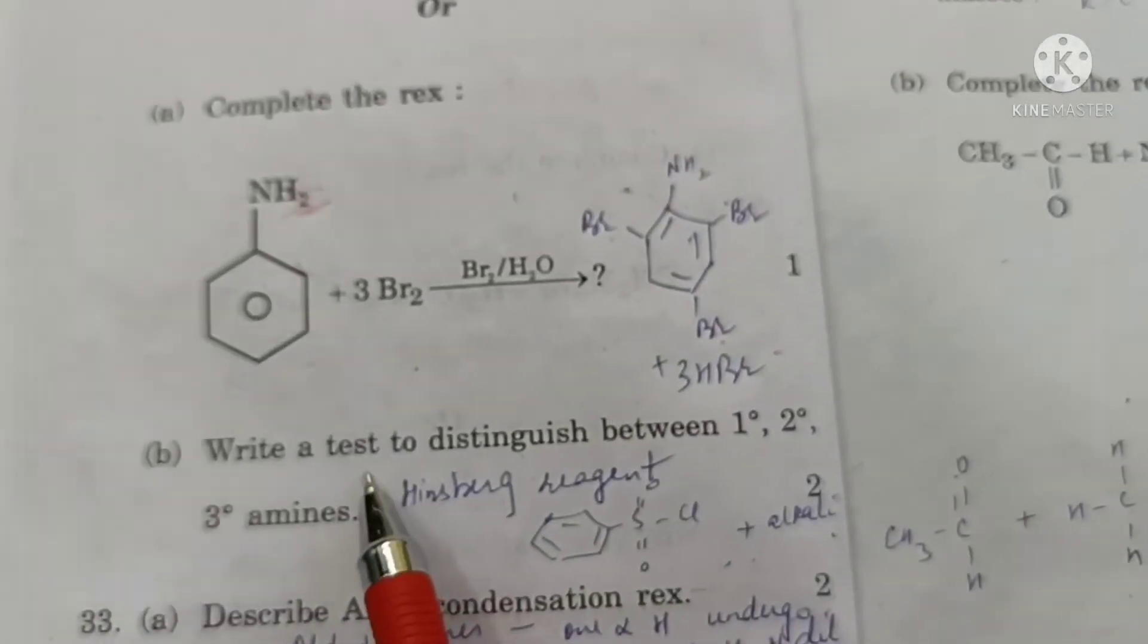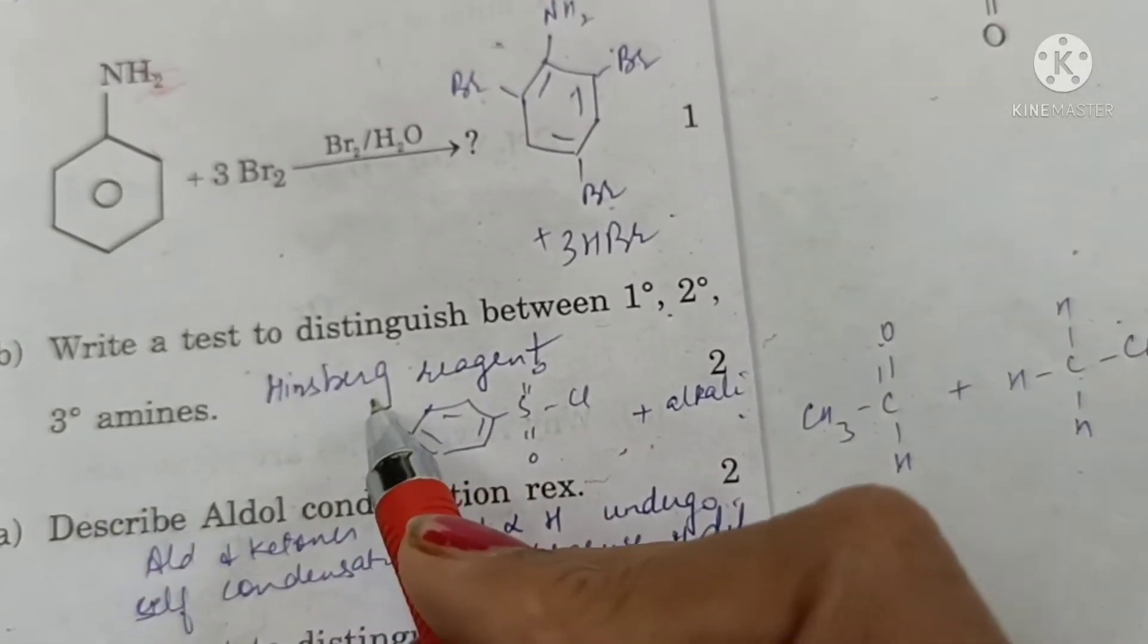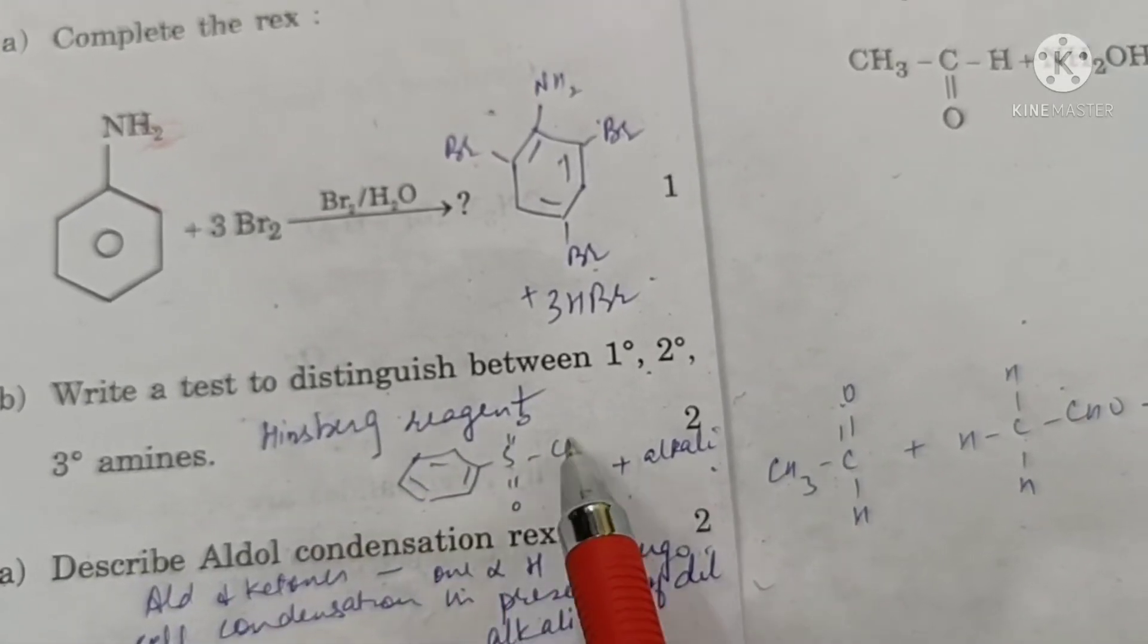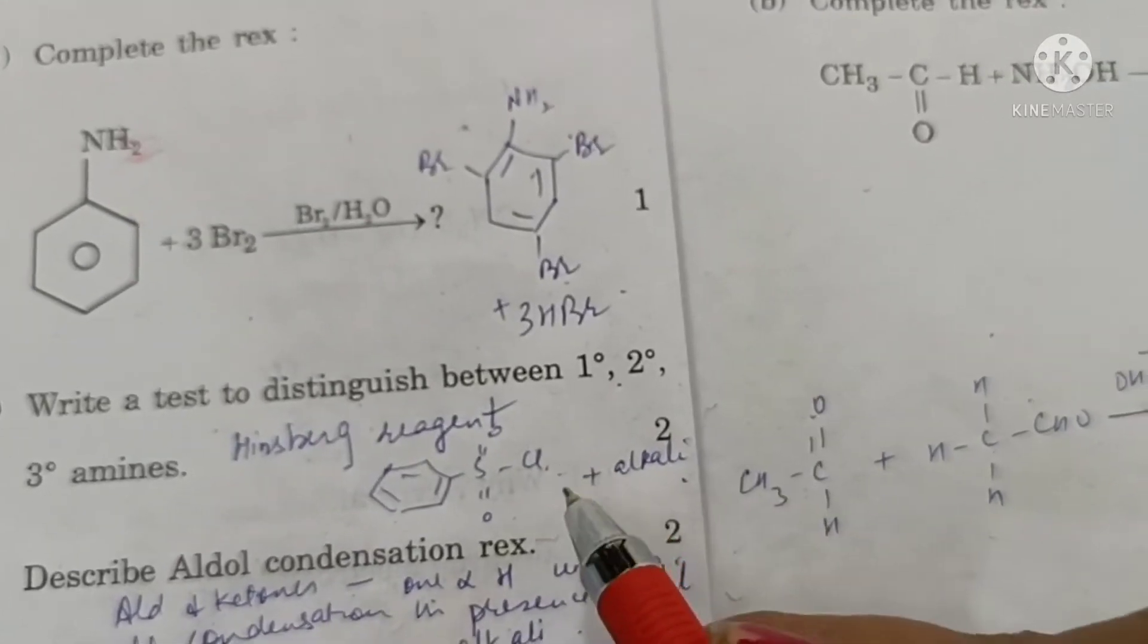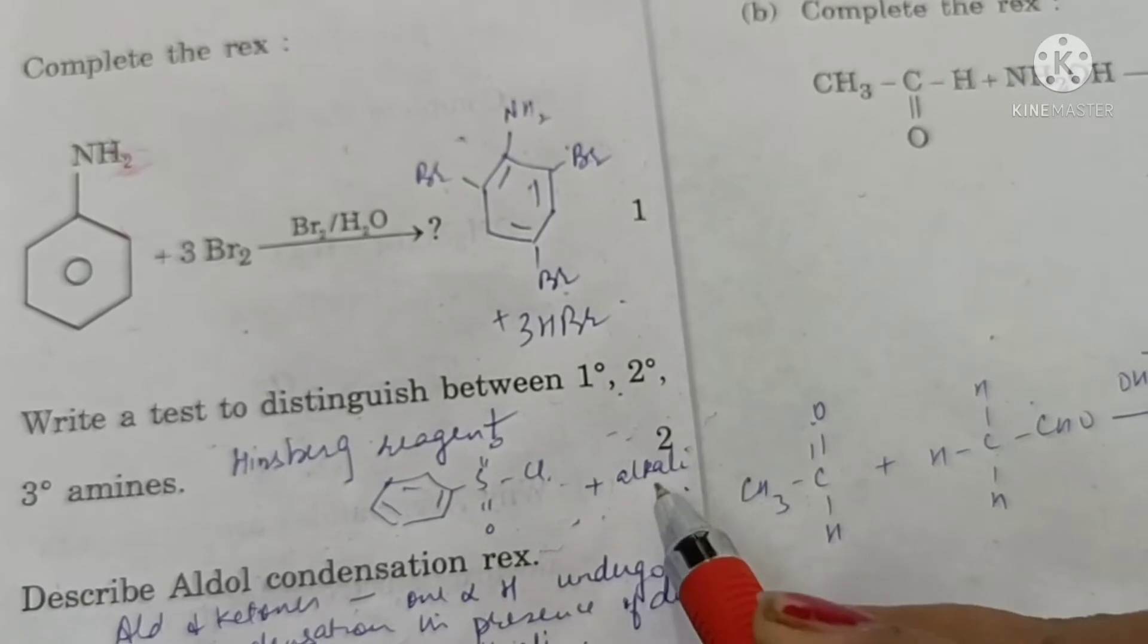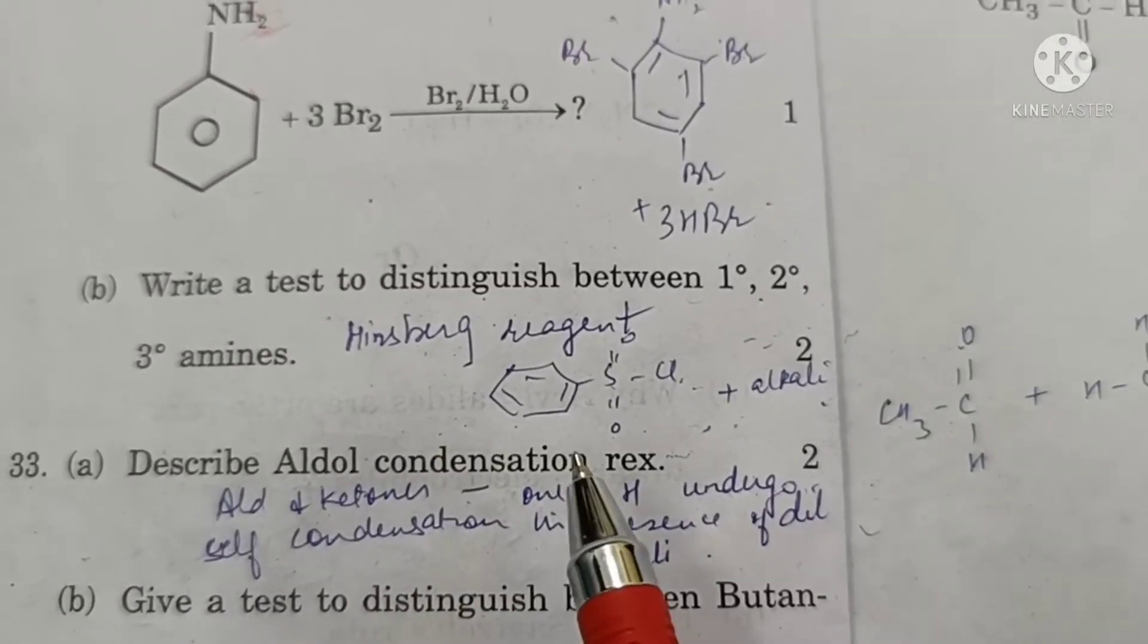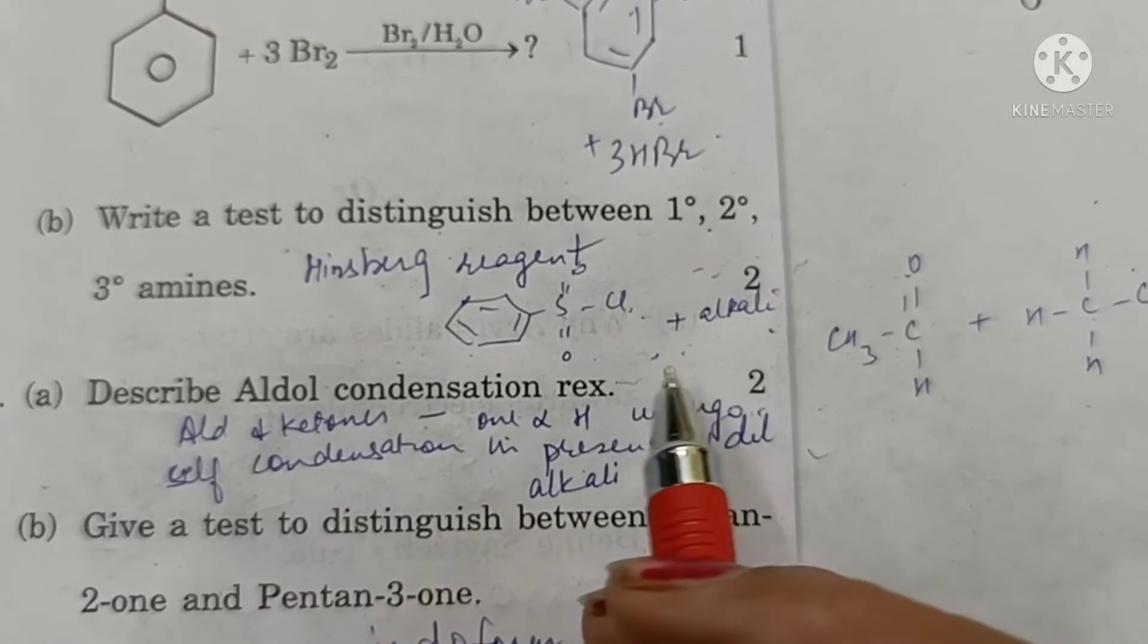A test to distinguish between primary, secondary and tertiary amine is Hinsberg test. Hinsberg reagent is benzene sulfonyl chloride. When reacted with alkyl halides, a primary alkyl halide will form a salt which is soluble in alkali but insoluble in acid. Secondary alkyl halide will form insoluble salt. Tertiary will have no reaction and will ultimately dissolve in acid.